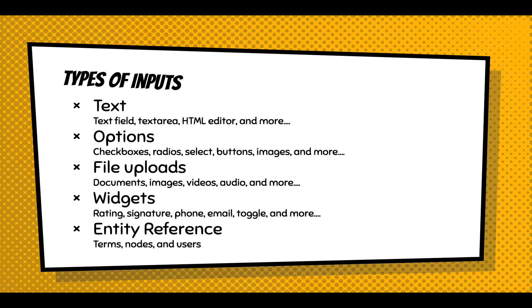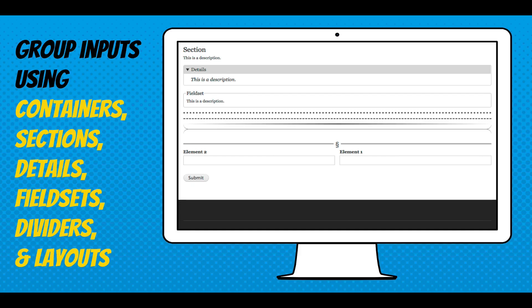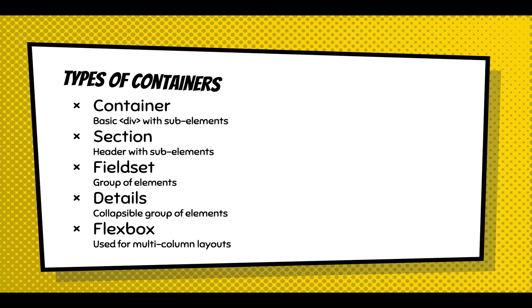Types of inputs include text fields, options, and file uploads. You get advanced widgets like ratings, signatures, phone numbers, and email. There are also entity references — the ability to have a dropdown show all users on the site or all your events. You can group elements using containers, sections, details, dividers, and layouts. Container is just a div. A section is a div with a header and section tag — important for accessibility. A field set is a group of elements. Details is the same but collapsible. Flexbox is how the Web Form Module allows multicolumn layouts.